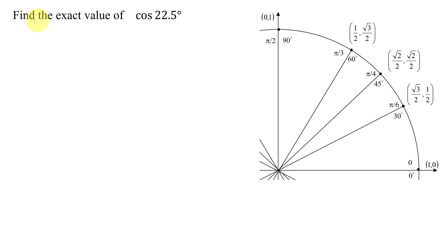In this example, I need to find the exact value of the cosine of 22.5 degrees. As it says exact value, I cannot use a calculator. I'm going to have to use the unit circle. And as 22.5 degrees is an acute angle, I've shown the first quadrant of the unit circle here. Notice 22.5 degrees is nowhere on the unit circle, so I'm going to have to use my knowledge of identities and formulas to figure out how to find this value given these angles.